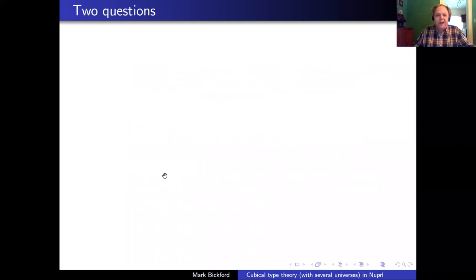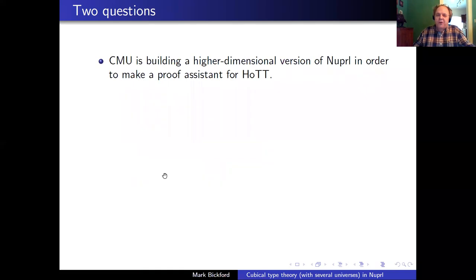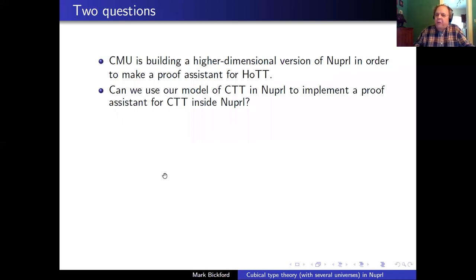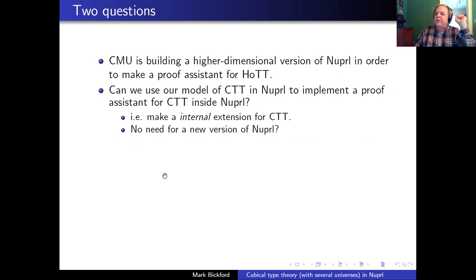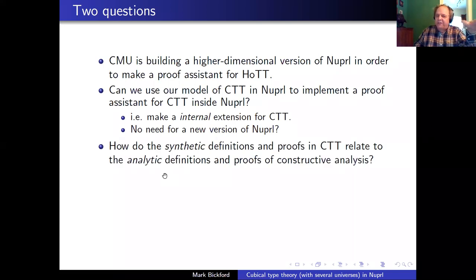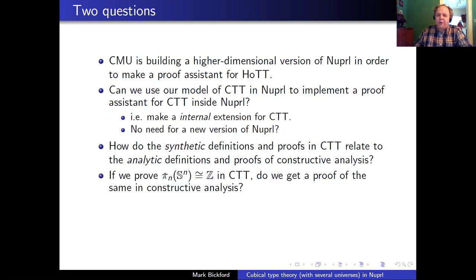Here are my two main questions. At CMU, they're building a new version, a higher dimensional version of NuPRL, to make a proof assistant for cubical type theory or HoTT or whatever. So the first question is, could I somehow use my model of CTT in NuPRL to implement a proof assistant for CTT inside of NuPRL as it is? Could I make some kind of internal extension for CTT inside of NuPRL so we wouldn't need a new version? The second question is, how do the synthetic definitions and proofs inside cubical type theory relate to the analytic definitions and proofs in constructive analysis? If we prove a theorem like π_n(Sⁿ) is isomorphic to the integers in CTT, do I get a proof of the same fact in constructive analysis?